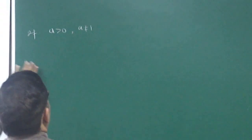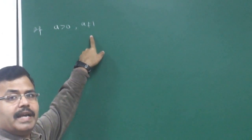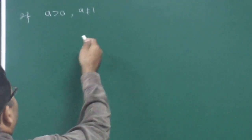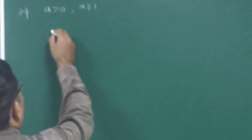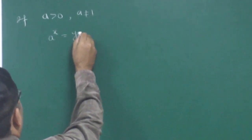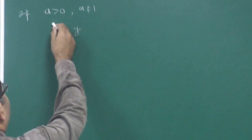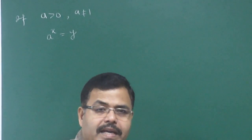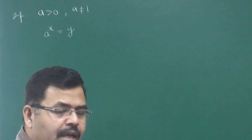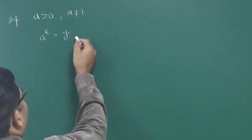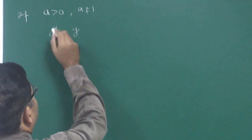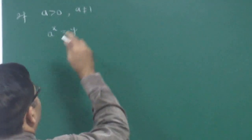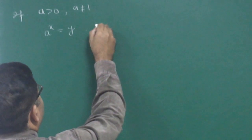If a is any number greater than 0 and a is not equal to 1, then for any other variable, say x, we can define a to the power x is equal to y. If a is a positive number, then the power of anything would always be positive. Even with positive power or negative power, whatever the power may be, it will always be positive. So if a to the power x — where a is a positive number and x is positive or negative, whatever it may be — the result is always positive. So y will also be positive.